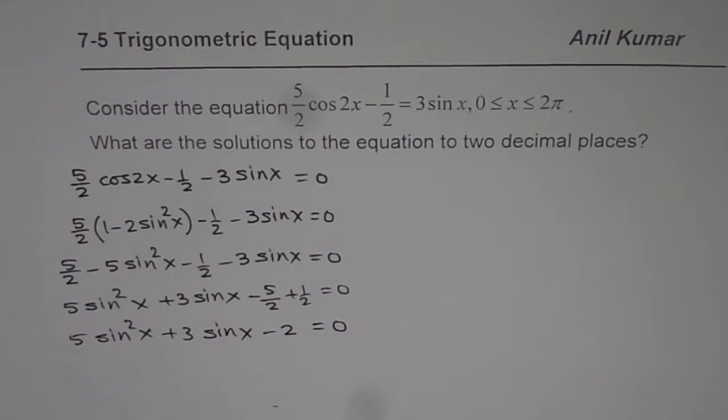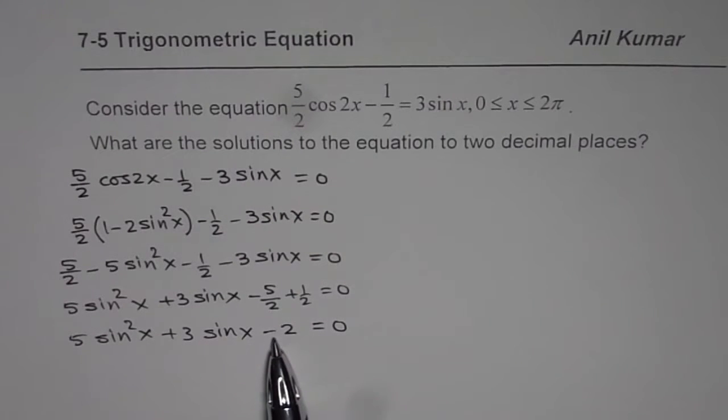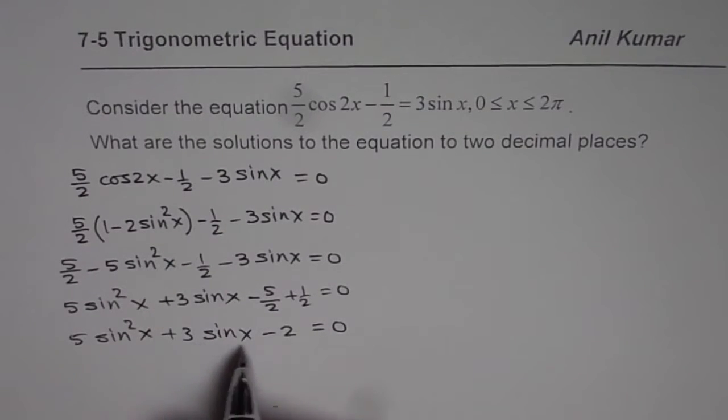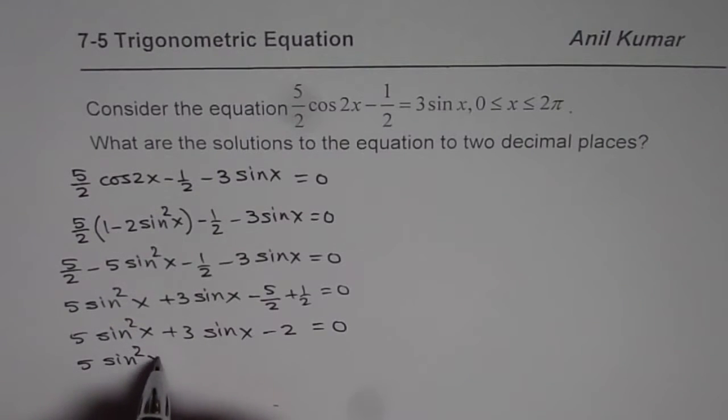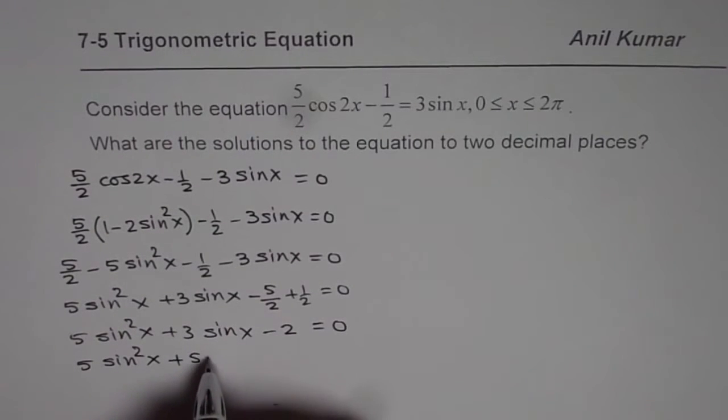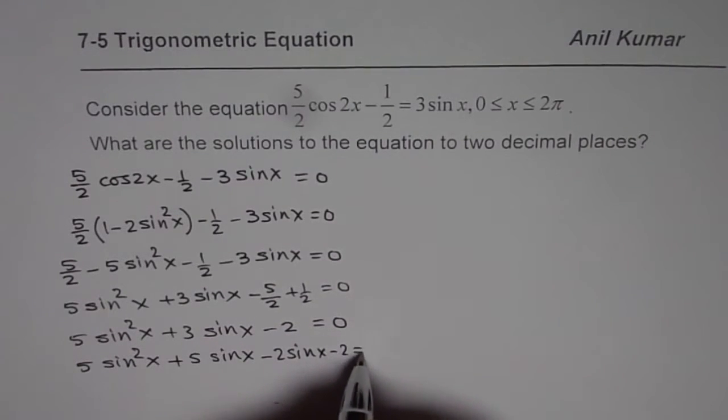Now we have a quadratic equation in sine where leading coefficient is 5. 5 times -2 is -10, and we need sum as 3. That means 5 and 2. When you add them up, we get 3. So we can write this as 5sin²(x) + 5sin(x) - 2sin(x) - 2 equals 0.